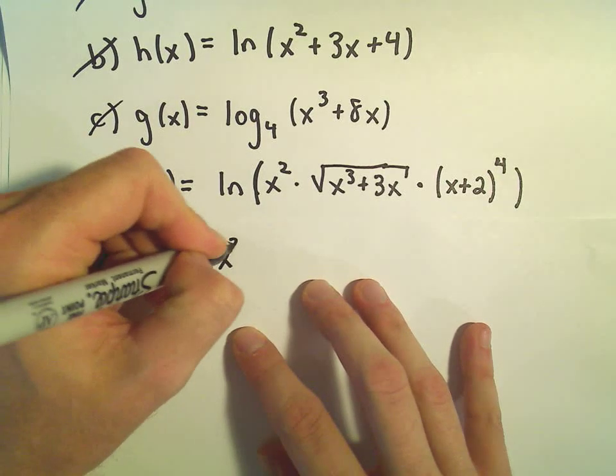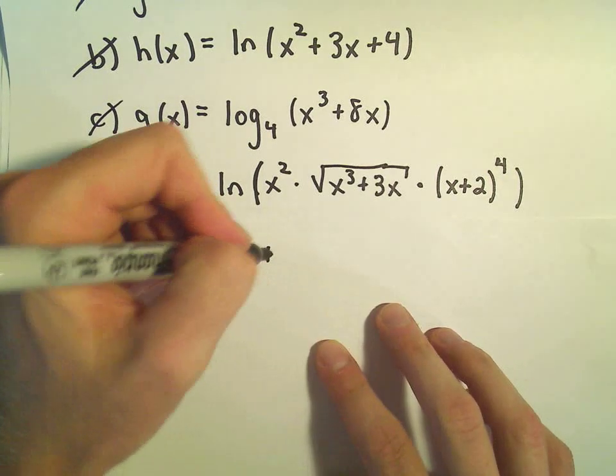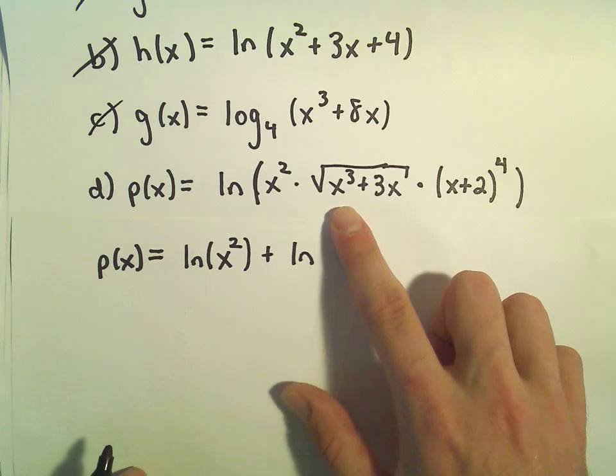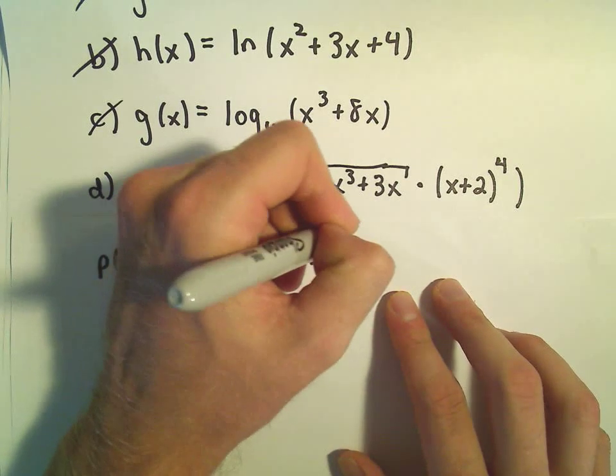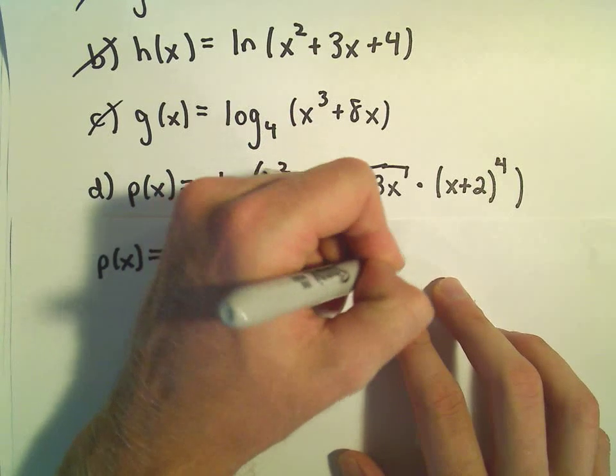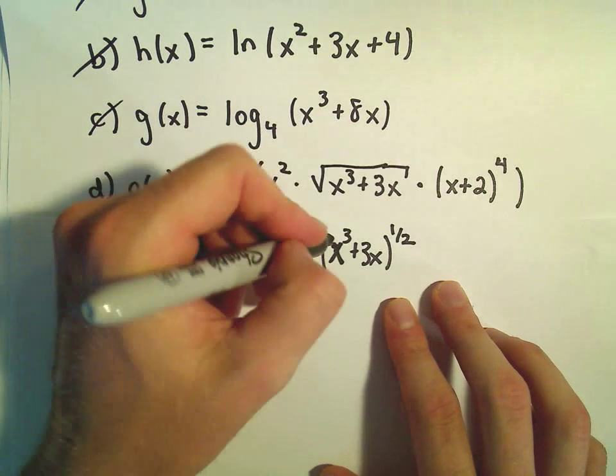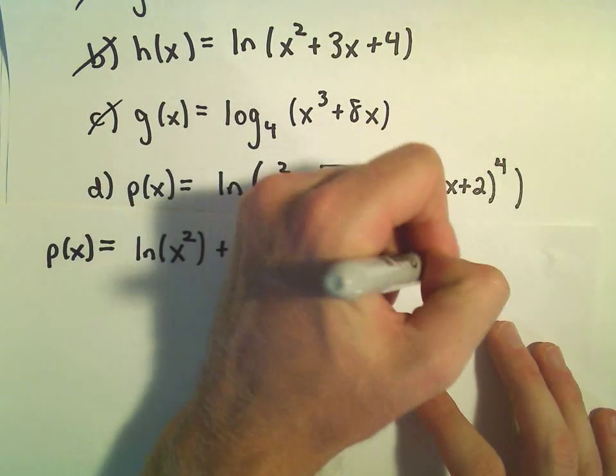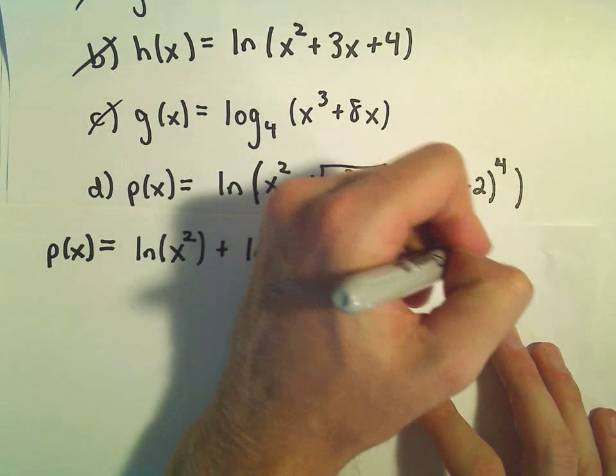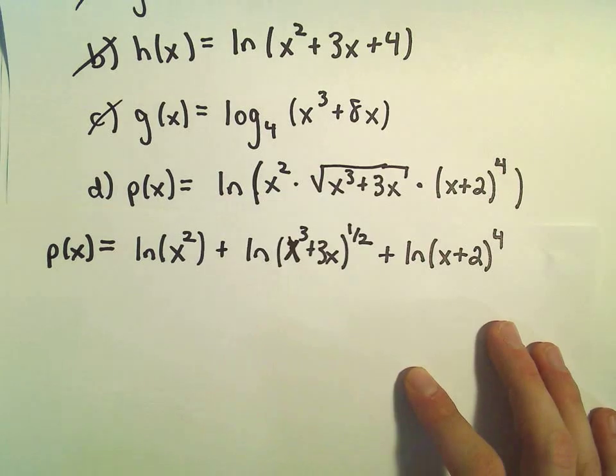So this would be ln of x squared plus ln of the square root of x cubed plus 3x. But I'm going to write the square root as x cubed plus 3x to the 1 half power. And then plus, we would have the natural logarithm of x plus 2 all raised to the 4th power.